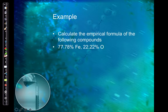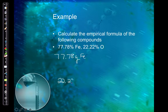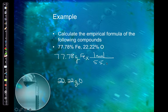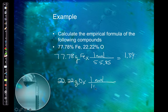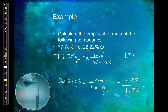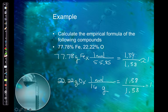Let's calculate the empirical formula. With 77.78% iron, assuming 100 grams gives 77.78 g Fe and 22.22 g O. Converting to moles: 77.78 ÷ 55.85 = 1.39 mol Fe; 22.22 ÷ 16 = 1.38 mol O. Now divide by the smallest (≈1.38): both give approximately 1. It's close enough to a whole number, so no further multiplication is needed. The empirical formula is FeO — a 1:1 mole ratio.